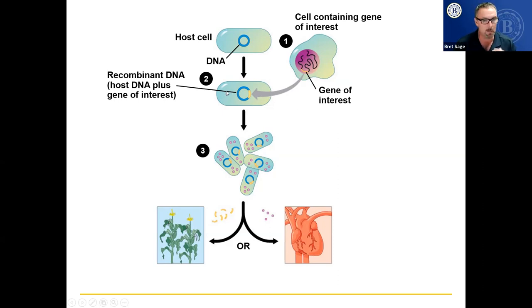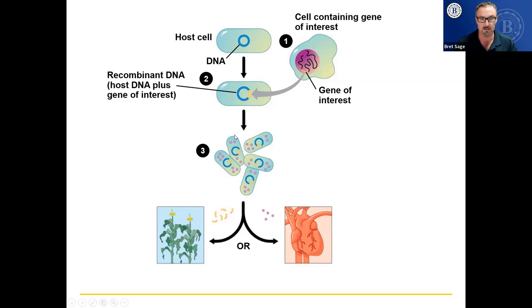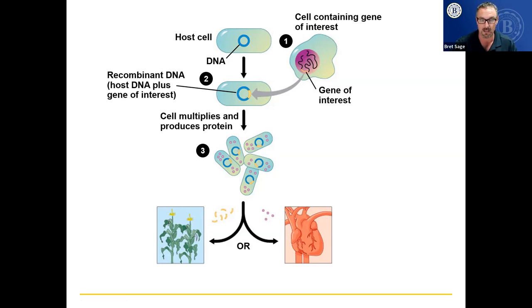Now two possible things can happen to this bacteria. Because the gene is in there, it will be used to produce protein. As the bacteria multiplies, all the new bacteria also have this gene and produce these pink proteins. Each pink circle is the protein resulting from this gene. The cell multiplies and produces the protein, and also replicates that DNA inside its cells.